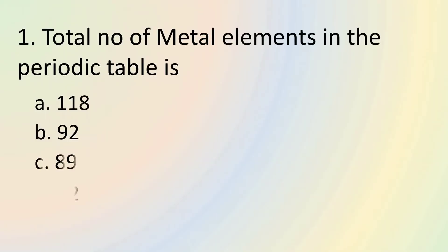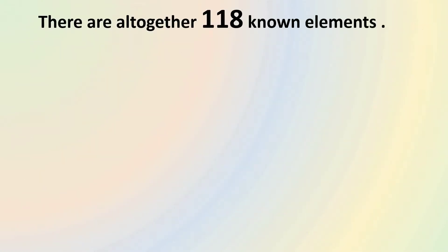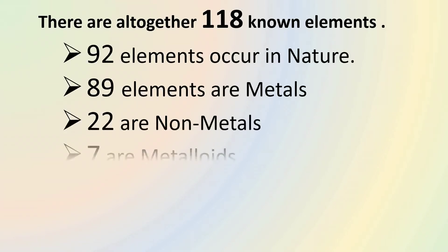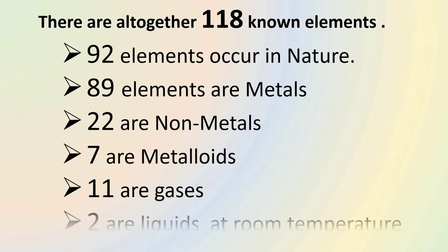Let's begin with total number of metal elements in the periodic table. There are in total 89 metal elements in the periodic table. Altogether, 118 elements are known, out of which 92 elements occur in nature, 89 elements are metals, 22 are non-metals, 7 are metalloids, 11 are gases and 2 are liquids at room temperature.